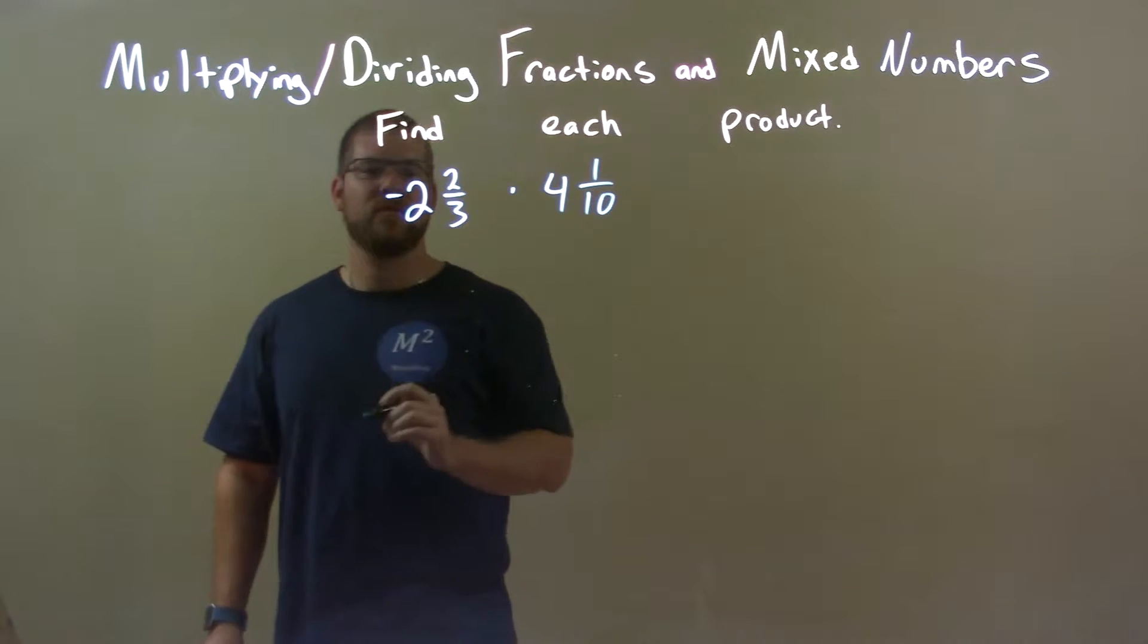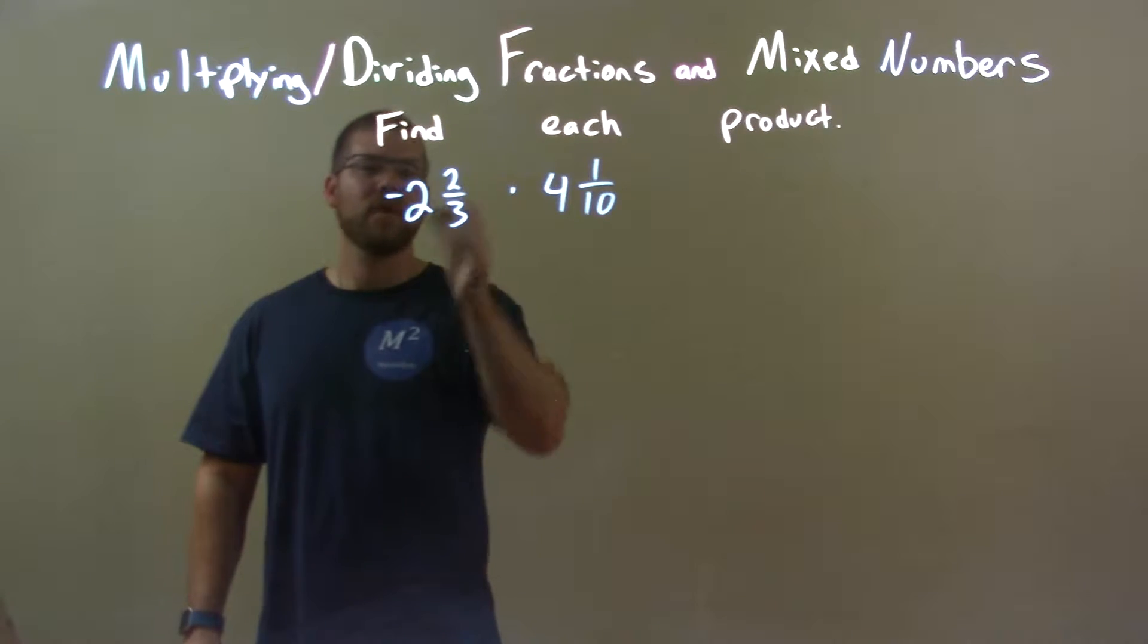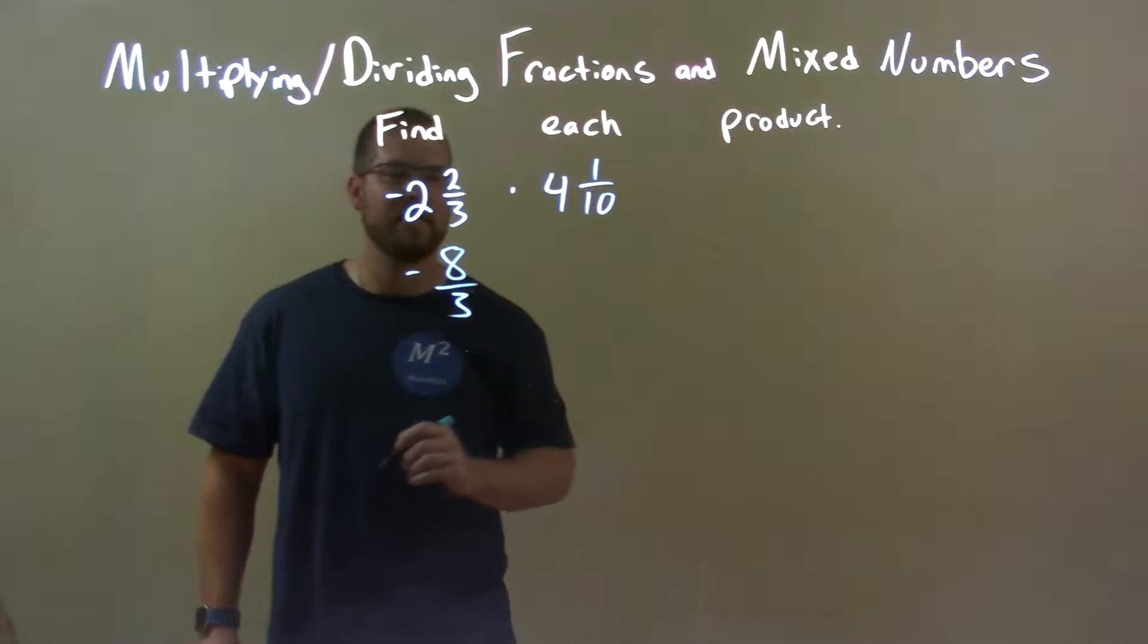So 3 times 2 is 6, plus 2 is 8. So we have 8 thirds here, and that's a negative.